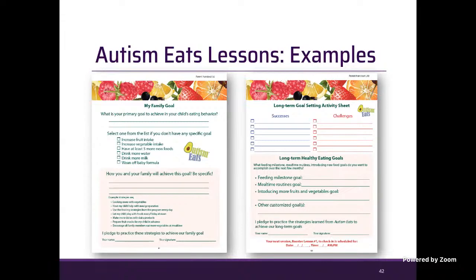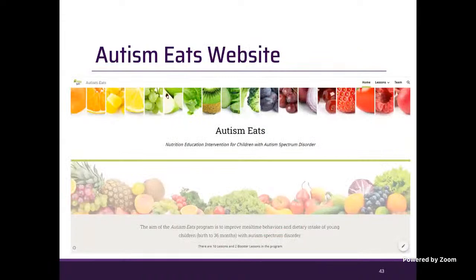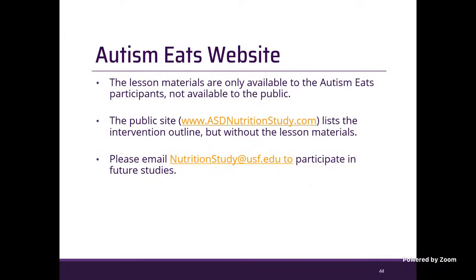Because we really focus on behavior change, families do goal setting for eating behavior and long-term dietary changes — around Lesson 6 for family goals and at the end of Lesson 10 for long-term goals. Our website allows parents to access all lesson materials and download them on mobile devices. This is not publicly available, but you can visit asdnutritionstudy.com to see the lesson outline and team members.